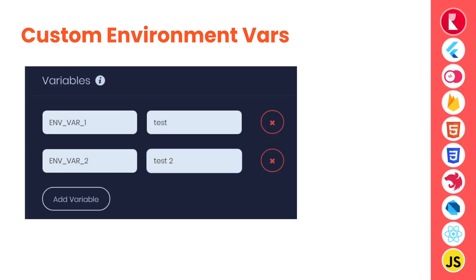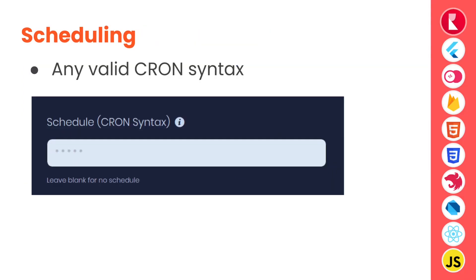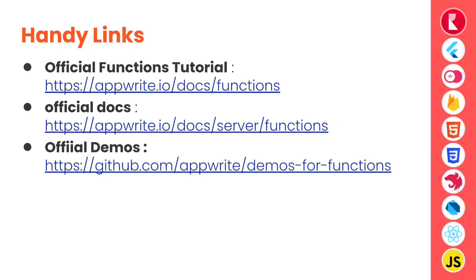These environment variables are useful when you want to pass configuration values to your cloud functions. You can schedule AppWrite functions using any valid cron syntax. To learn more about AppWrite Cloud Functions, you can head over to the official cloud functions tutorial or the official docs, and also the official demos repository where you can find various examples in various runtimes. This is all for today — I hope this session was useful and you got an overall introduction to AppWrite functions. In the upcoming episodes we will use this knowledge to implement a cloud function to add new functionalities to our application.